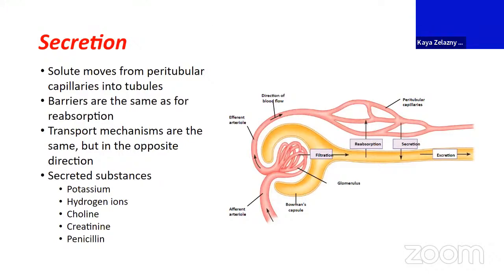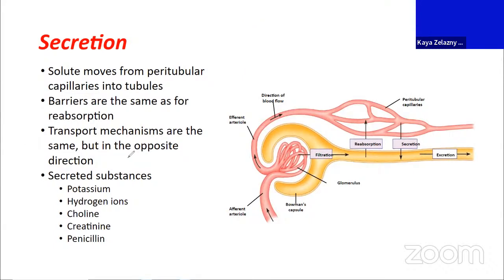Today we're going to keep walking through the different processes going on in our kidneys. Thus far, we talked about filtration happening at the glomerulus and in the renal corpuscles. We have fluid and solutes coming out of the blood in this capillary bed and moving into our nephron as filtrate. It'll ultimately become urine after we do some fiddling with its contents.